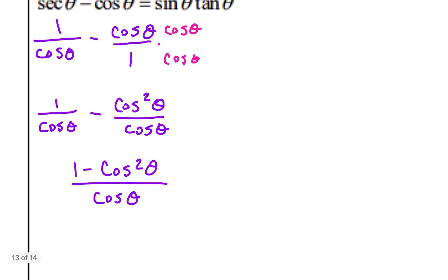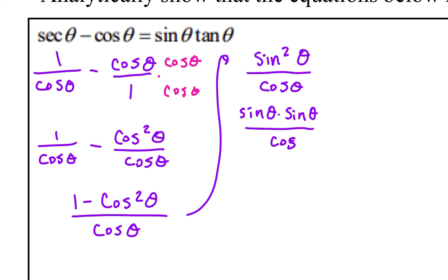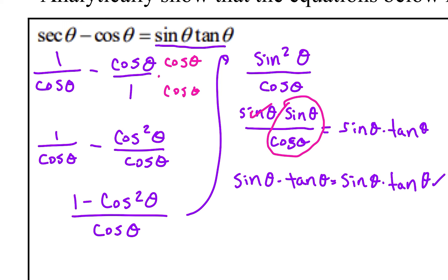Now we're getting close. I recognize that 1 minus cosine squared represents one of our trig identities — that's the same as sine squared theta over cosine theta. Since I've got two sines on top, I can separate those out and make it sine of theta times sine of theta over cosine of theta. And since sine over cosine is tangent, I can rewrite that as sine of theta times tangent of theta, which equals sine of theta times tangent of theta. They're verified.